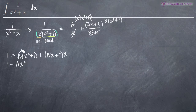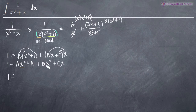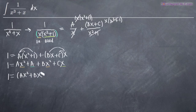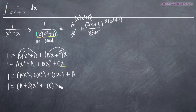We multiply through the right-hand side to expand. The first term gives us Ax squared plus A. The second term gives us Bx squared plus Cx. Now we collect like terms: the x squared terms are Ax squared and Bx squared, the x term is Cx, and the constant is A. Factoring out the x variables, we get the quantity A plus B times x squared, plus C times x, plus A.